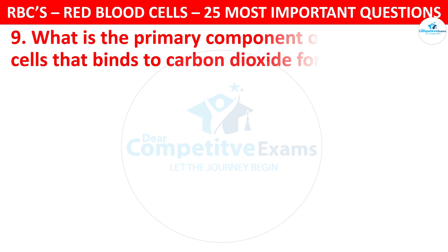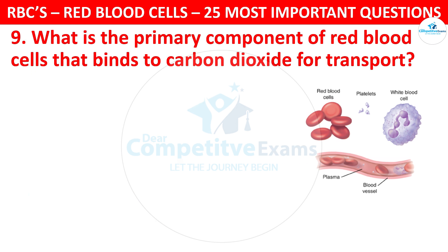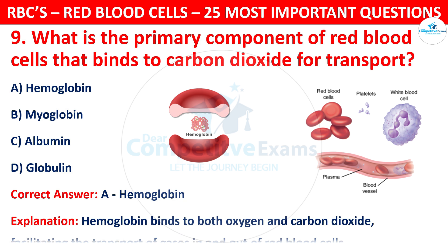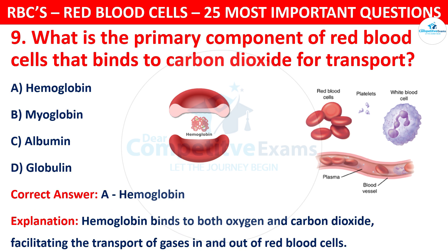Question 9. What is the primary component of red blood cells that binds to carbon dioxide for transport? Your options are: Hemoglobin, Myoglobin, Albumin, or Globulin. The correct answer is A, that is Hemoglobin. Hemoglobin binds to both oxygen and carbon dioxide, facilitating the transport of gases in and out of red blood cells.